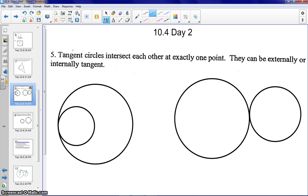Tangent circles intersect each other at exactly one point, and they can be either external or internally tangent. An example of external tangent circles would be over here on our right. So let me draw a line through there, through circle P and Q, and they'll have the same point of tangency, T.